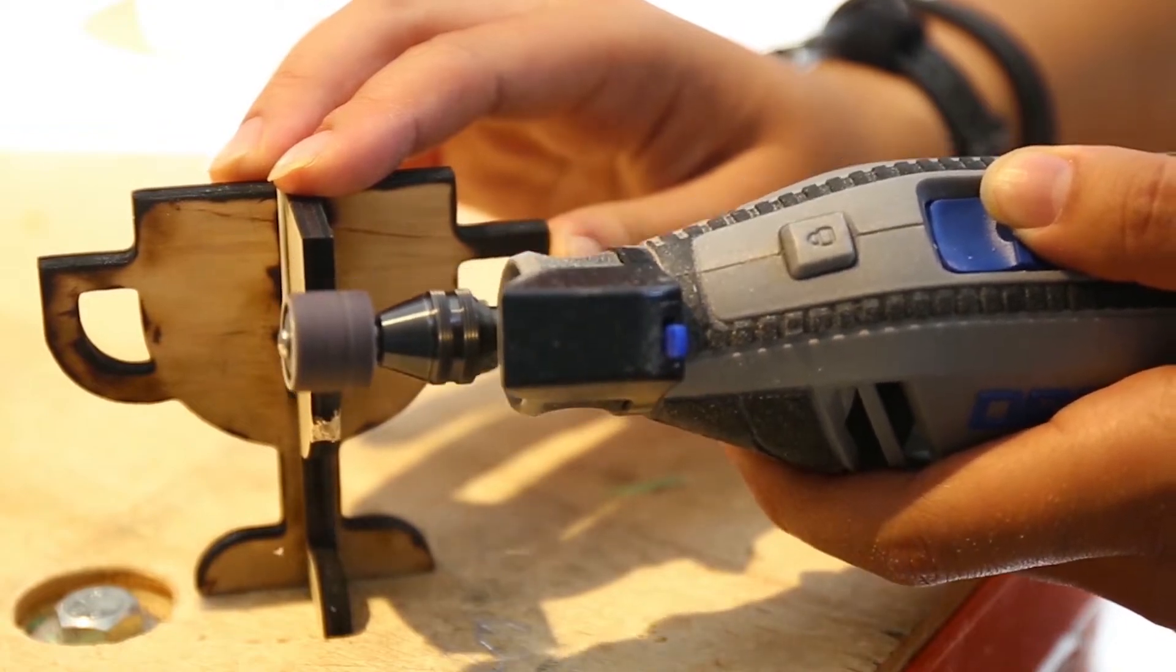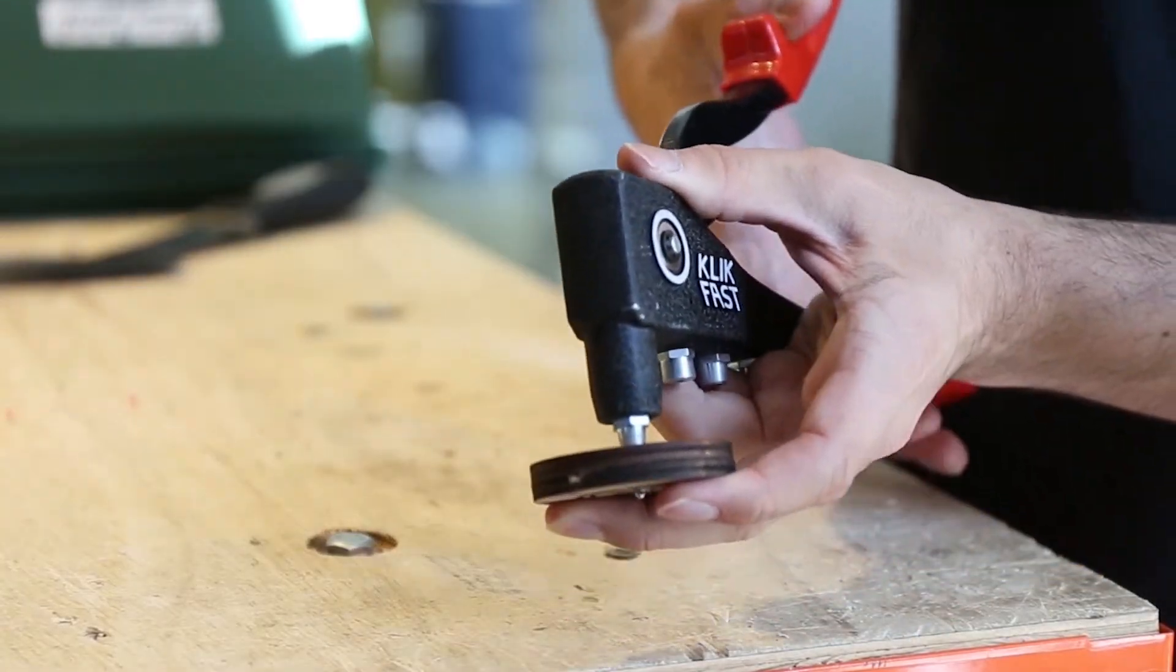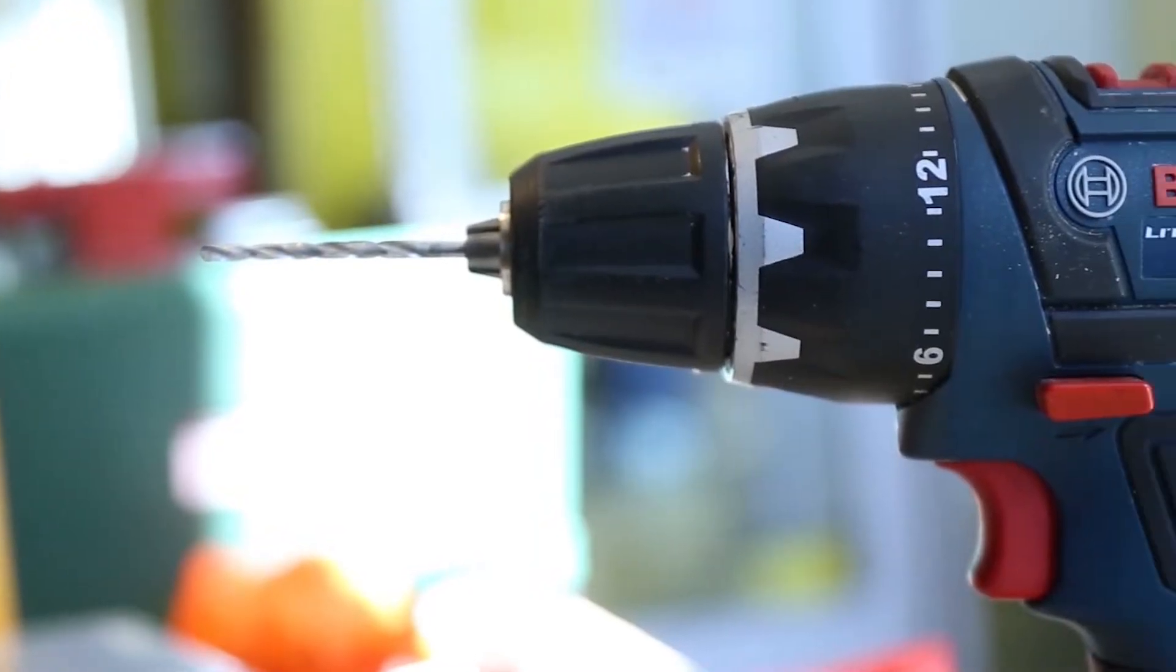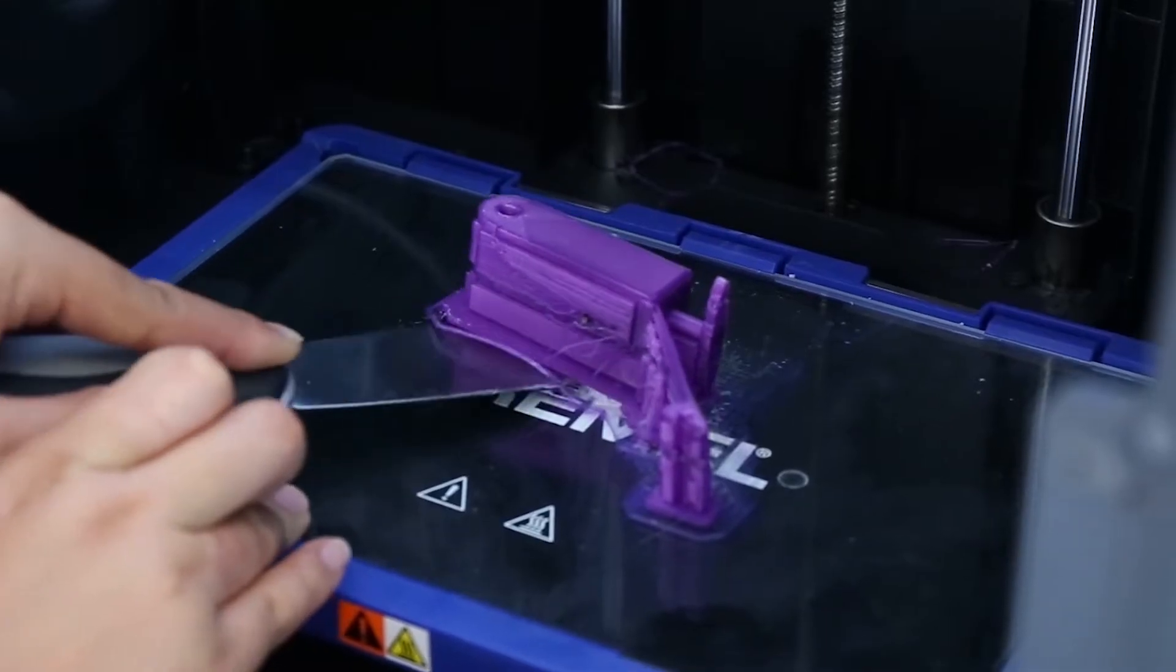Thousands of injuries occur each year due to improper use of handheld tools. This could be anything from a rivet gun to a hammer and even an electric drill. You can reduce your chances of injury by exercising the safe practices outlined in this video.